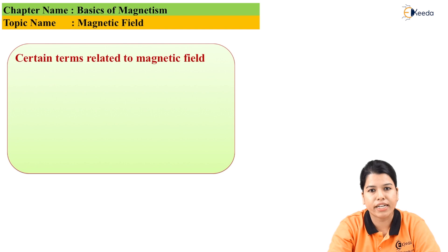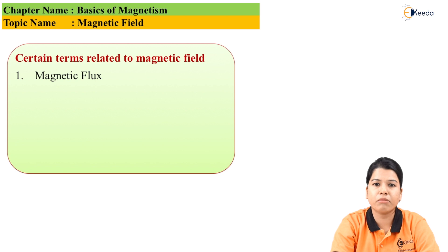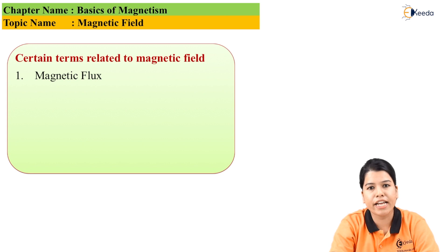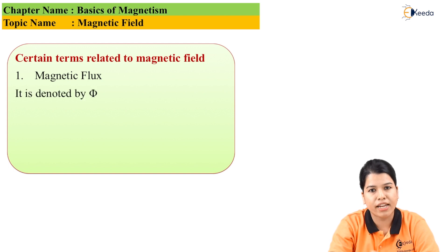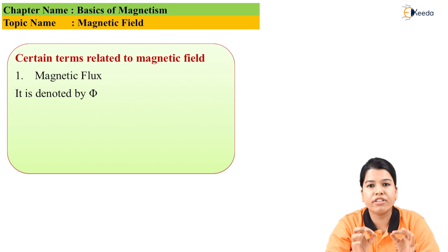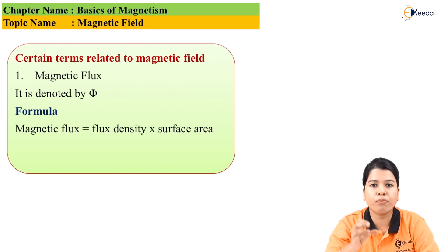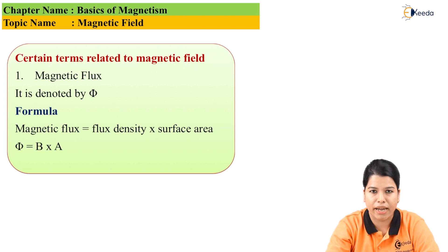The first term related to the magnetic field is magnetic flux. Magnetic flux is the total number of magnetic lines of forces present in the magnetic field. It is denoted by the symbol phi (φ) and its unit is weber. In reality, magnetic flux is an imaginary concept with no actual physical existence, but Faraday introduced it to pictorially explain how the magnetic field aligns itself around the magnet.